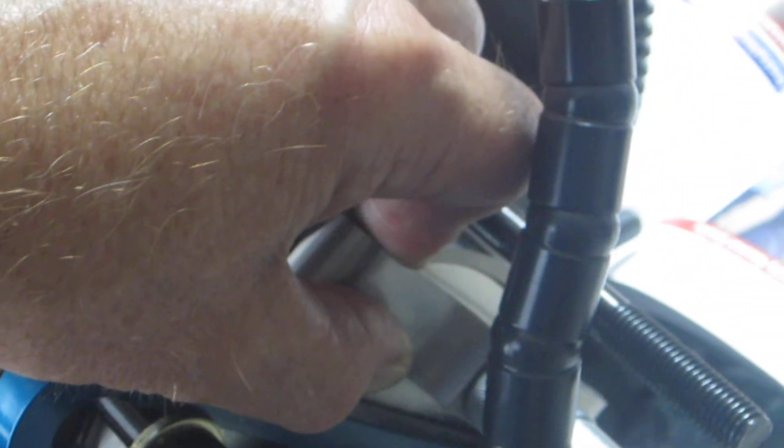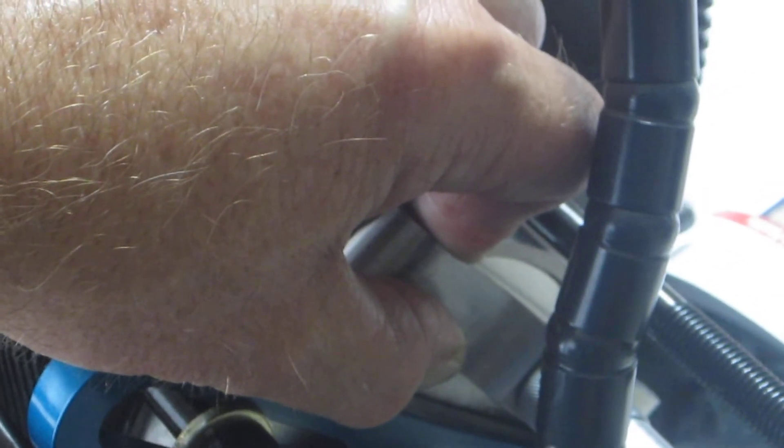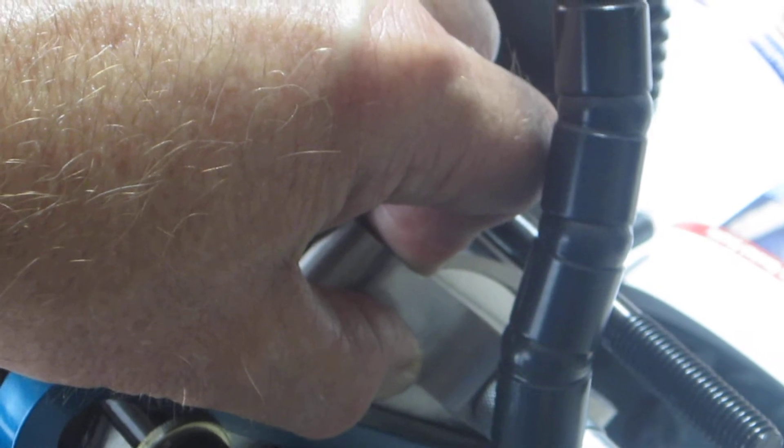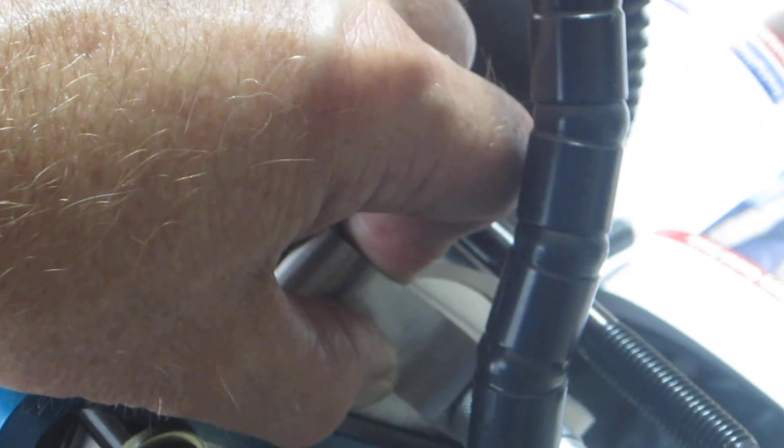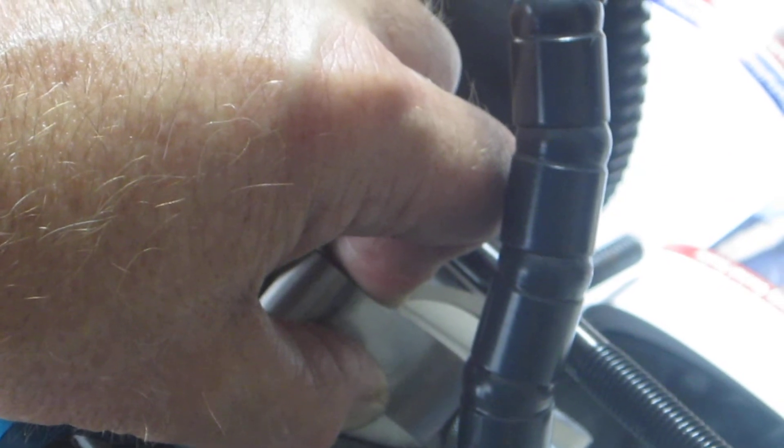60 thousandth shim underneath the piston right now, and it has a 3.5 millimeter raised surface - which I believe, if my math is correct, that's 0.140 inches. So adding the 0.140 inches with the 60 thousandth shim I've got,